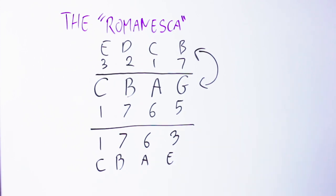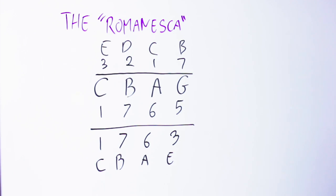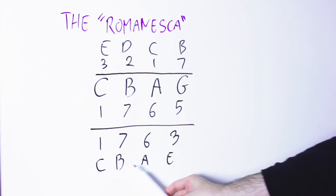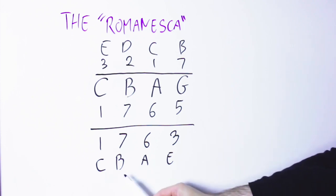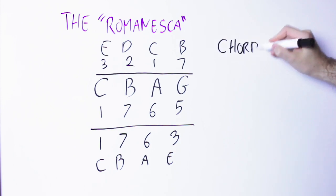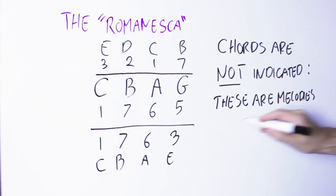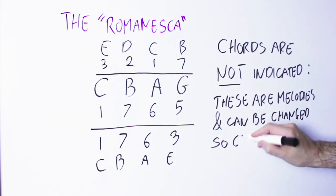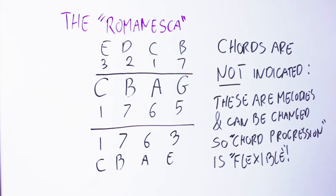Notice that nowhere in the Romanesca is it specified in what octave all those notes are, so the bass line can go down to the third or up to the third. So I can do C, B, A down to E, or I can do C, B, A up to E. Notice how so far I haven't specified the chords. Of course I can see what chords we're actually playing, but in the mind of a classical musician this is a collection of melodies that go together and your job as a composer is to elaborate those melodies. You can change those melodies — this is just your starting point — and so the chord progression is flexible because you can change a note here and a note there and play different chords.